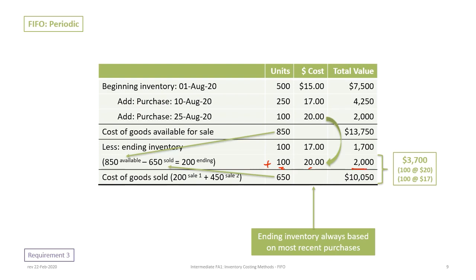That gives us a total of $3,700 in ending inventory. In the cost of goods calculation, 650 units were sold in total: 200 units in the first sale were at $15, and in the second sale, the remainder of the beginning inventory plus a portion of the $17 inventory was sold. So ending inventory is 850 available minus 650 sold equals 200 units, broken down as shown.